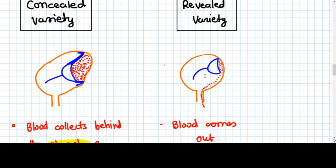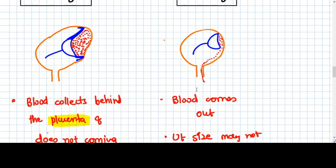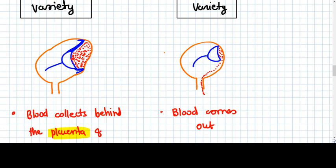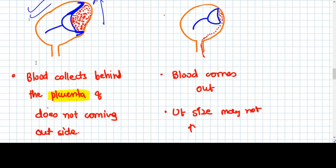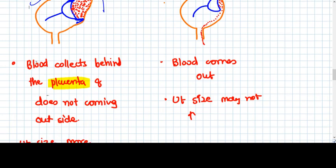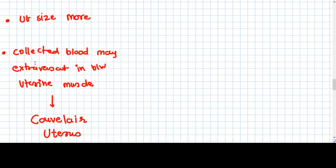What happens in concealed thing is when the blood clot is forming behind the placenta, the uterine size increases, because the clot is not a small one, you know, even 500 to 1 liter of clot can be there. It's not a small clot. So this volume of this blood clot increases the volume of uterus. So the uterine size is more than the gestational age. But in revealed variety, it is not like that.